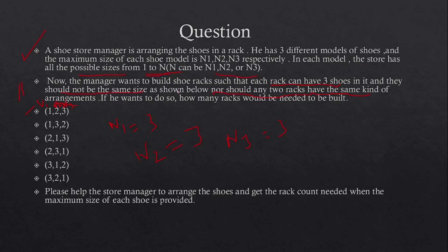For n1 the possible sizes are 1, 2, 3. For n2 the possible values are 1, 2, 3. For n3 the possible values are also 1, 2, 3. Each rack can have three shoes.